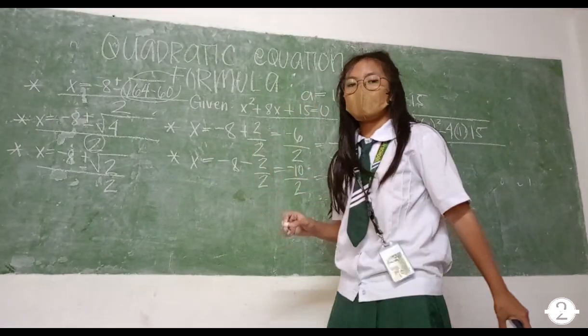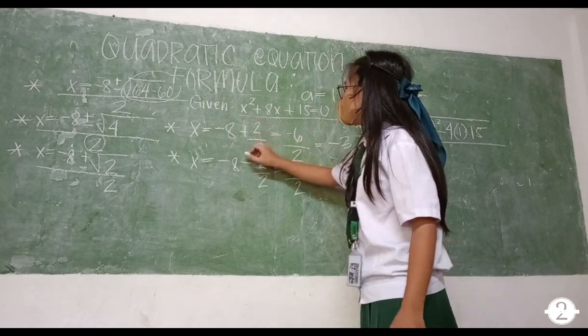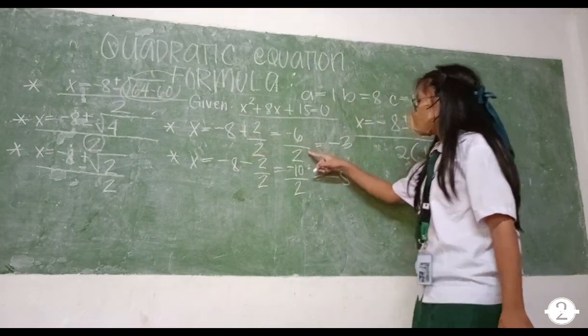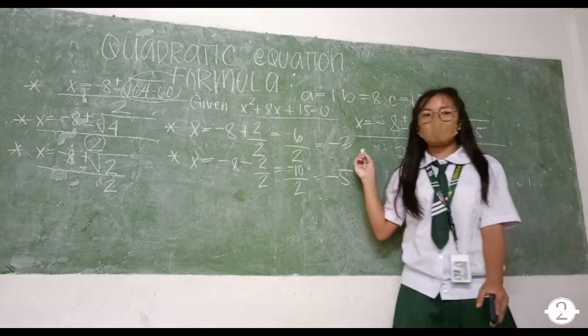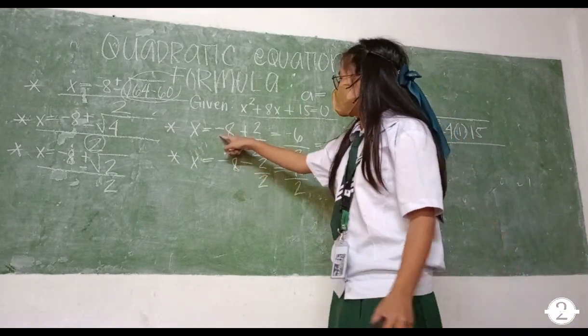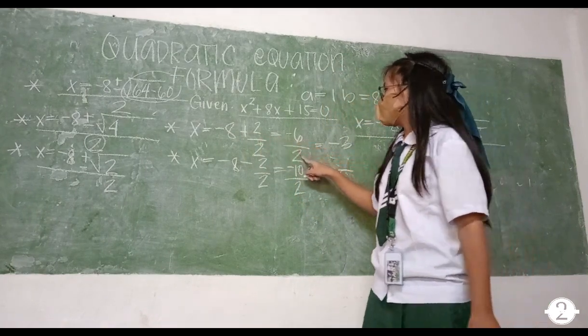Kunin naman natin ngayon ang equation ng plus and minus. So unahin natin yung addition. x equals negative 8 plus 2 over 2 equals negative 6 over 2 equals negative 3. So paano naman natin nakuha yung negative 3? Negative 8 plus 2 over 2 is equals negative 6 over 2.